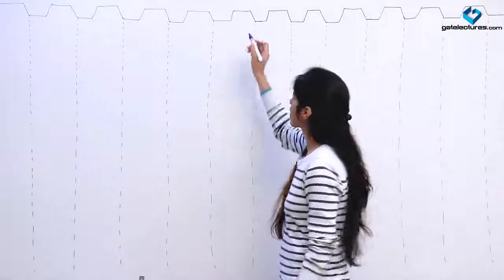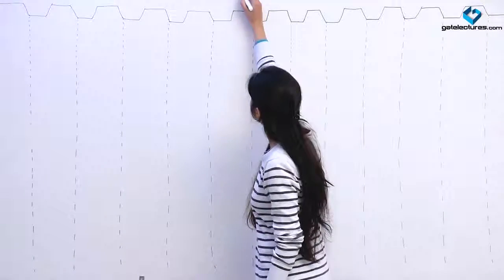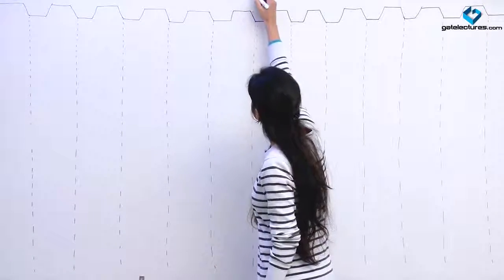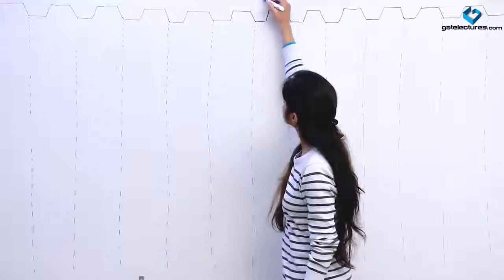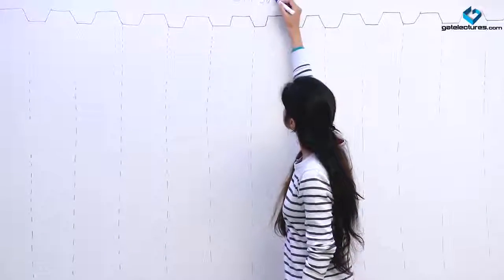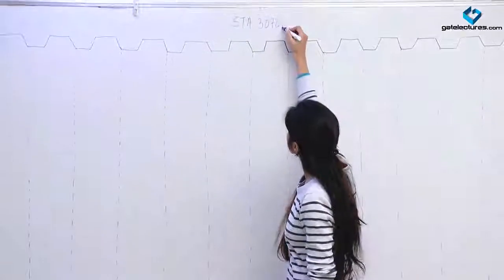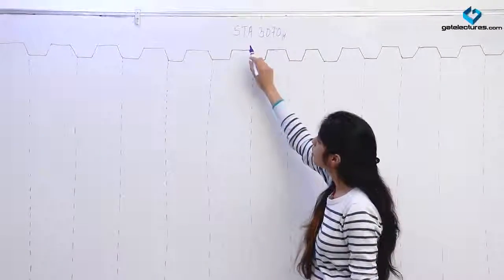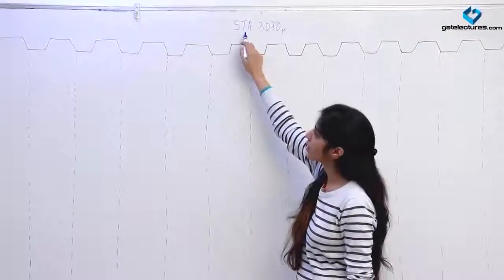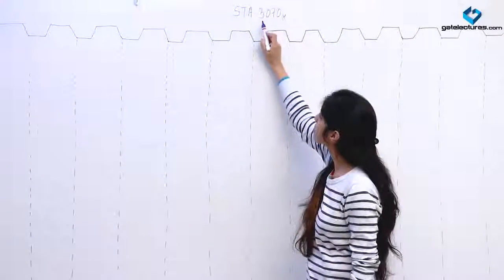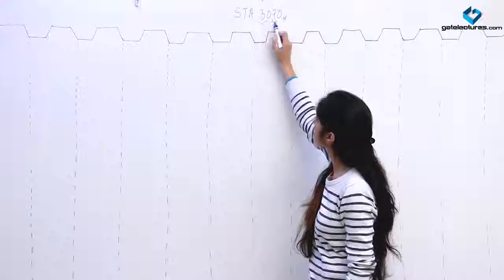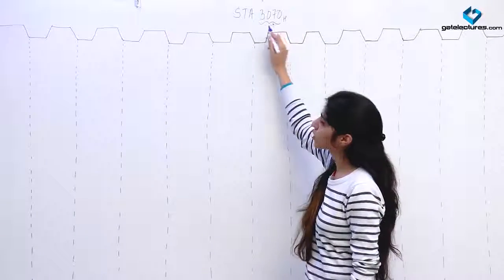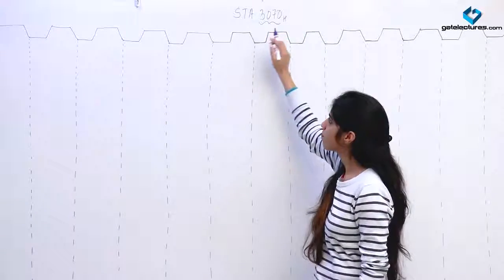Now let us look at the timing diagram of the instruction known as STA. Suppose we are given an instruction STA 3070. What this instruction does is it is going to store the contents of the accumulator at memory location 3070.